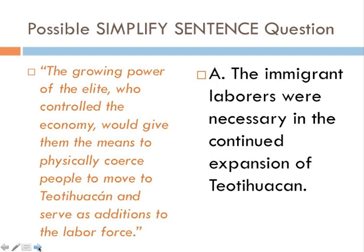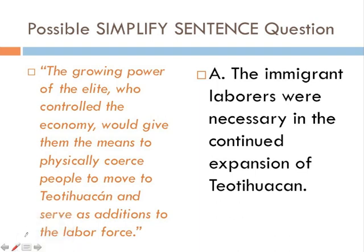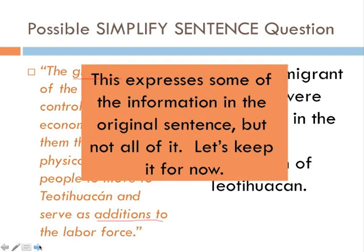Looking at answer choice A: "the immigrant laborers were necessary in the continued expansion of Teotihuacan." We do see the word "growing" referenced and the idea of "addition to the labor force." It looks like some of the information may be restated. It does mention that immigrant laborers were necessary, but it seems to leave out some information. Let's keep it for now, but notice it doesn't mention anything about the elites or the powerful in the society — so we might want to eliminate it later.